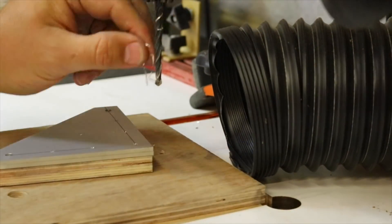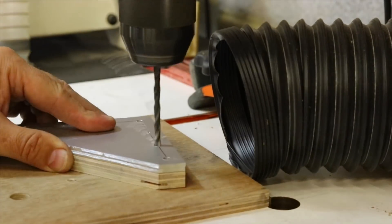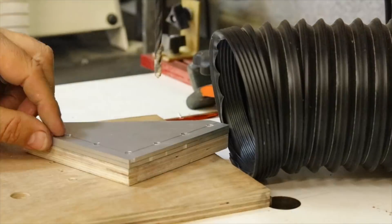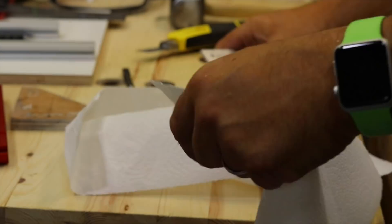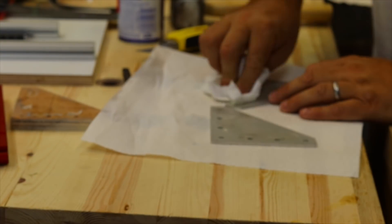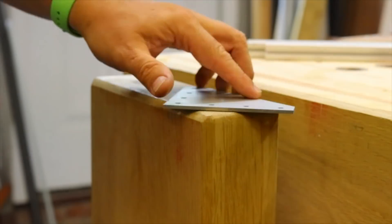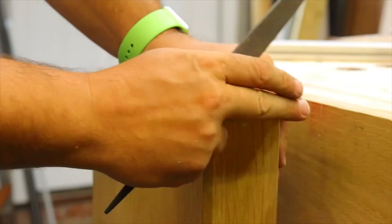I find when drilling through aluminum, if you have a backer of wood, it can lift the aluminum off and create a burr on the other side. But if you drill through when it's pushed against another piece of aluminum, you get less of a burr on the other side of the hole.